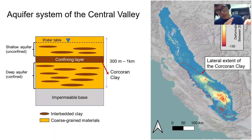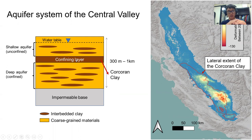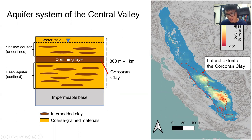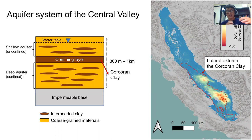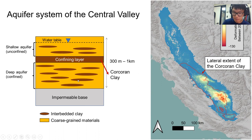In the southern part of the valley, there is a regional confining layer called the Corcoran clay, which divides the shallow aquifer and the deep aquifer. The shallow aquifer is unconfined and the deep aquifer is confined. You can see the lateral extent of the Corcoran clay here, and the large subsidence anomalies are included in this extent, giving us a clue that the major source of deformation is from the deep confined aquifer.